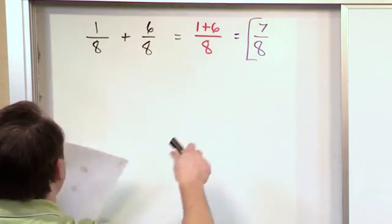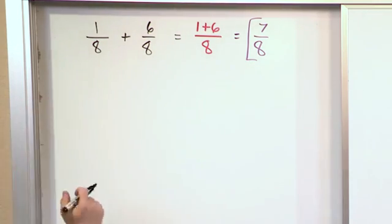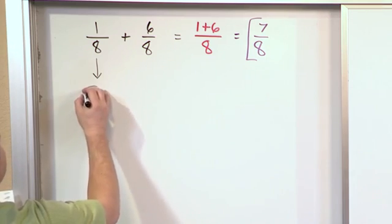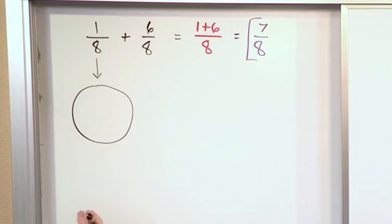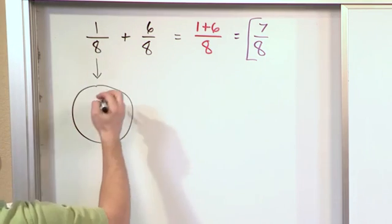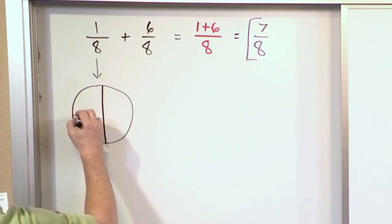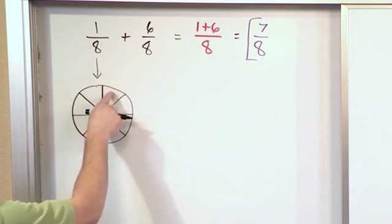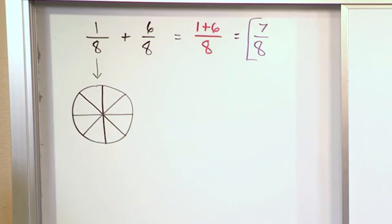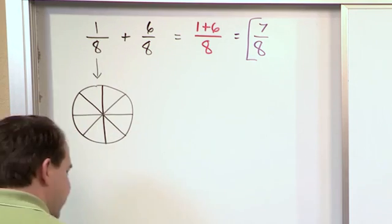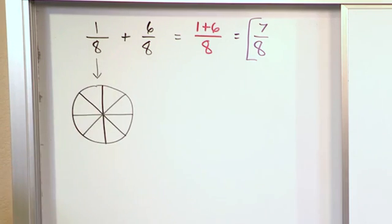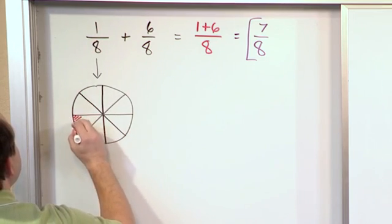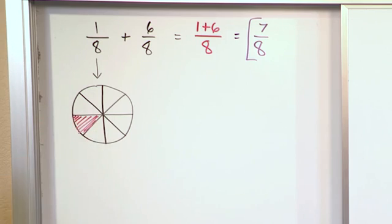Let me spend just a minute showing what's happening in terms of a picture for the first couple of problems. One-eighth, if we represent that graphically, one way to do that is to draw a pizza or pie and split it into eight pieces. You draw one line down vertically, one down horizontally, and then a big X through the center — giving you eight pieces of the pie. That's why we're doing eight pieces. This fraction one-eighth is not the whole pie; it's only one piece out of eight.